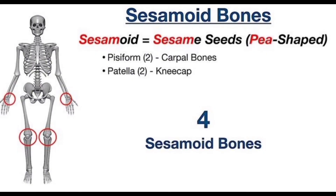Now, sesamoid bones. Sesamoid bones resemble the sesame seed. The trick to remembering sesamoid bones is to use the first part of the word 'sesame' to remember their seed-like shape. Additionally, you can think of them as being pea-shaped, which aligns with pisiform and patella — both starting with P. Sesamoid bones are small seed-like shaped bones that develop within tendons. Examples include the pisiform, found within the flexor carpi ulnaris tendon, and the patella, found in the quadriceps tendon, where it serves as an attachment for the patellar tendon. Most adults have just four sesamoid bones — two pisiform and two patella — though some individuals may have additional sesamoid bones near joints of the hand and feet.